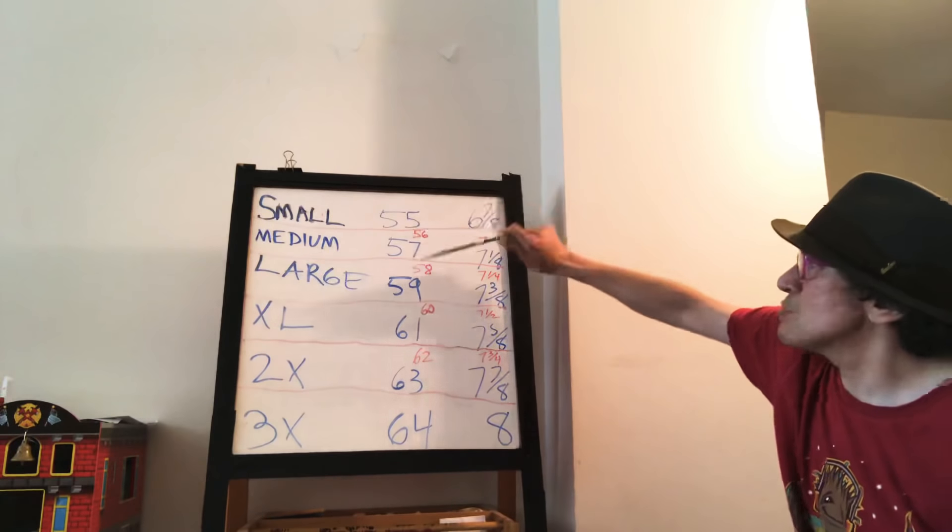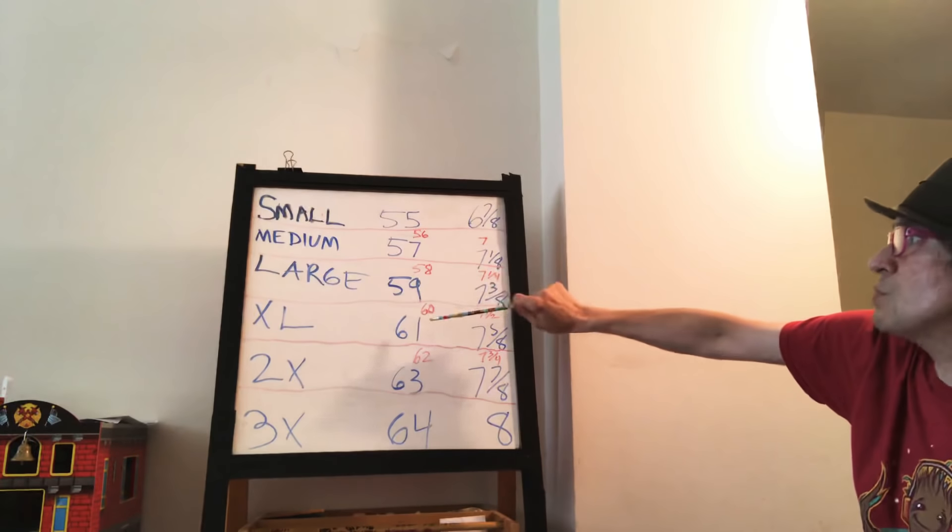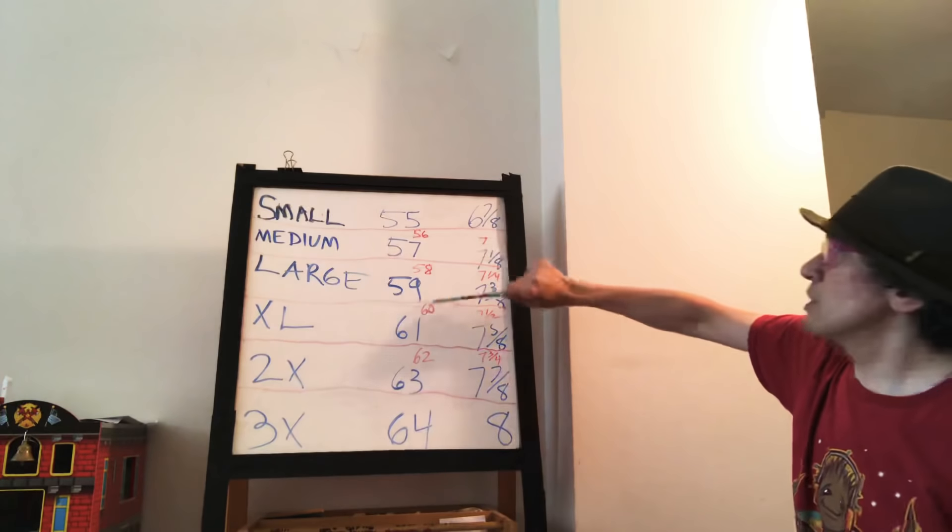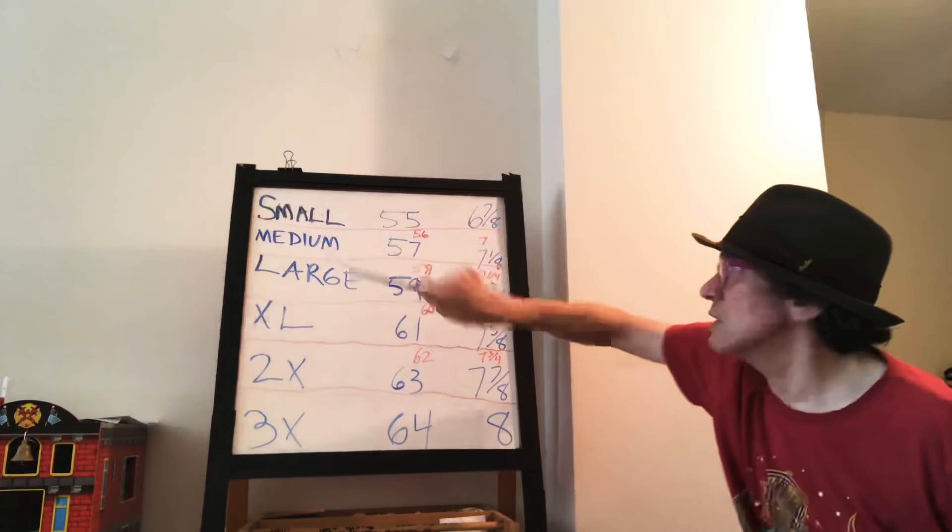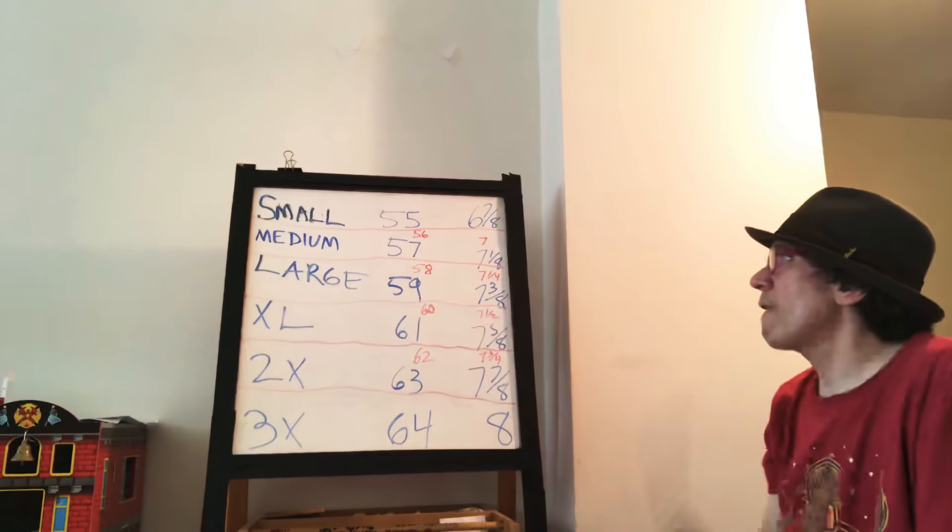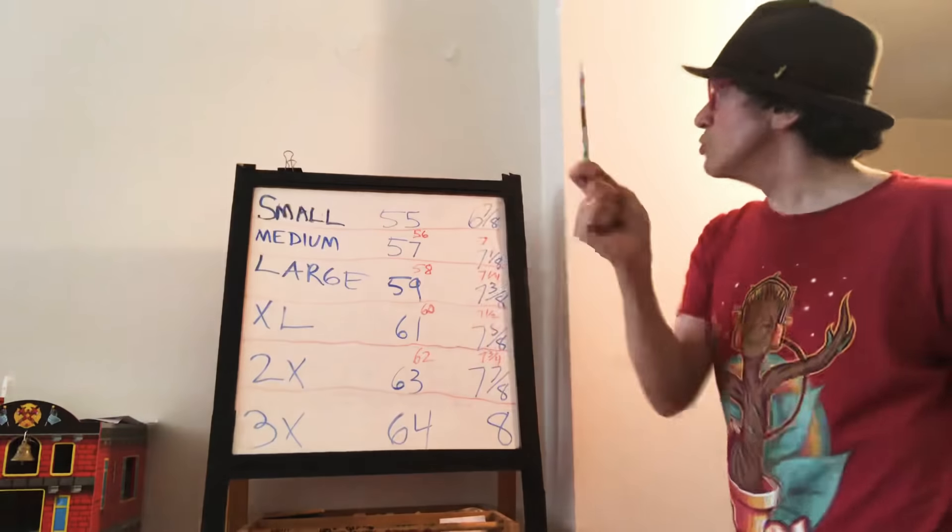Here's your sizes right here. Small, medium, large, extra large. 55, 57, 59, 61. So medium and large. Just remember those two and the rest fall into place. 57 is medium, 59 is large. I'm going to say it one more time.